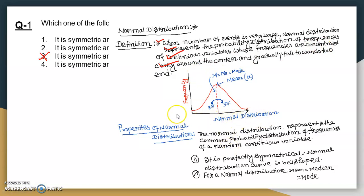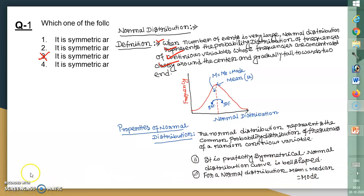The x-axis represents the normal distribution values and the y-axis gives the frequency. The bell-shaped curve shows median equals mean equals mode, meaning there is a 50-50 chance around the center. These are the properties of normal distribution — it is perfectly symmetrical, bell-shaped, and mean equals median equals mode. It is NOT symmetric around the variance. So the answer is option 3.